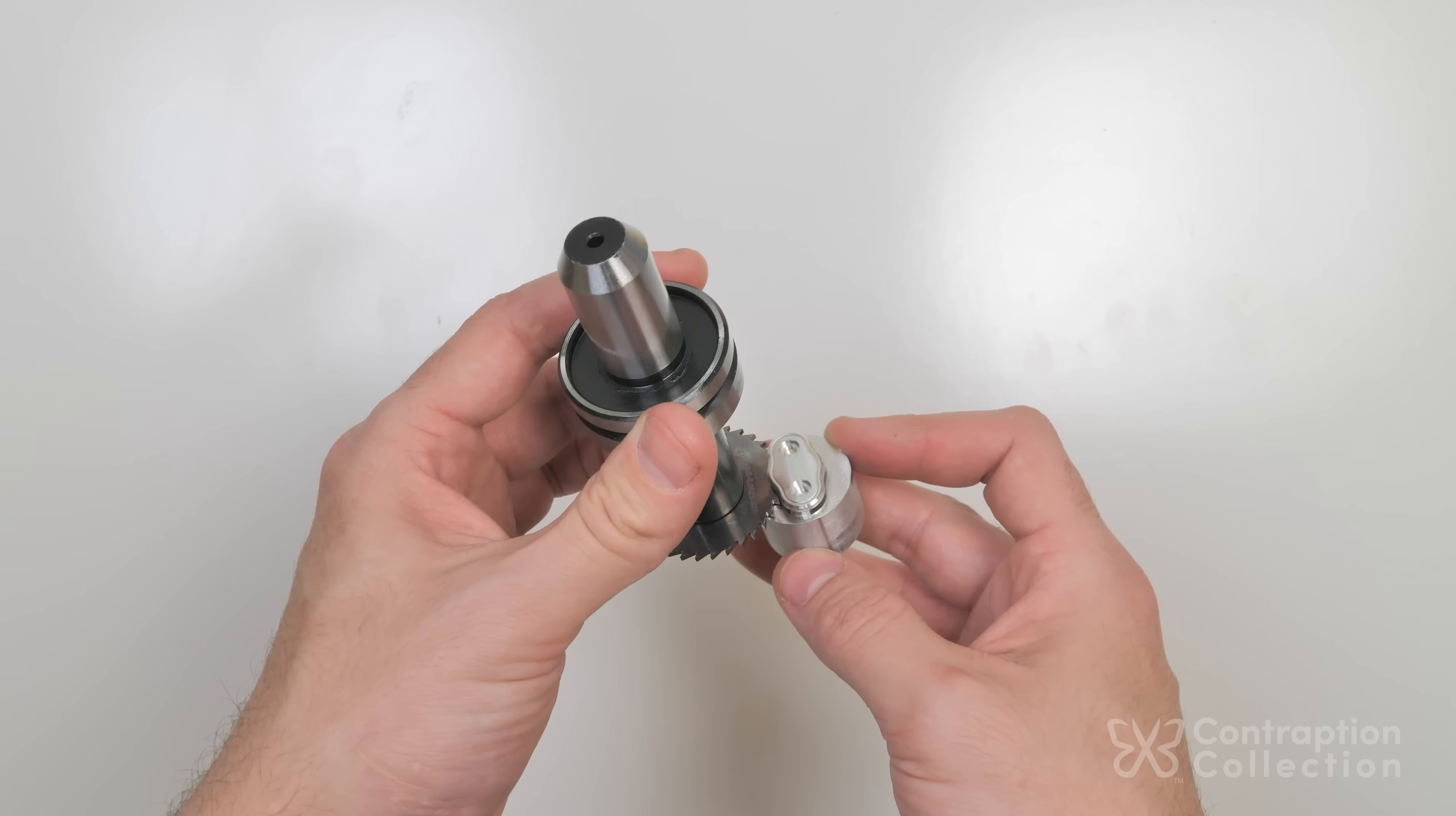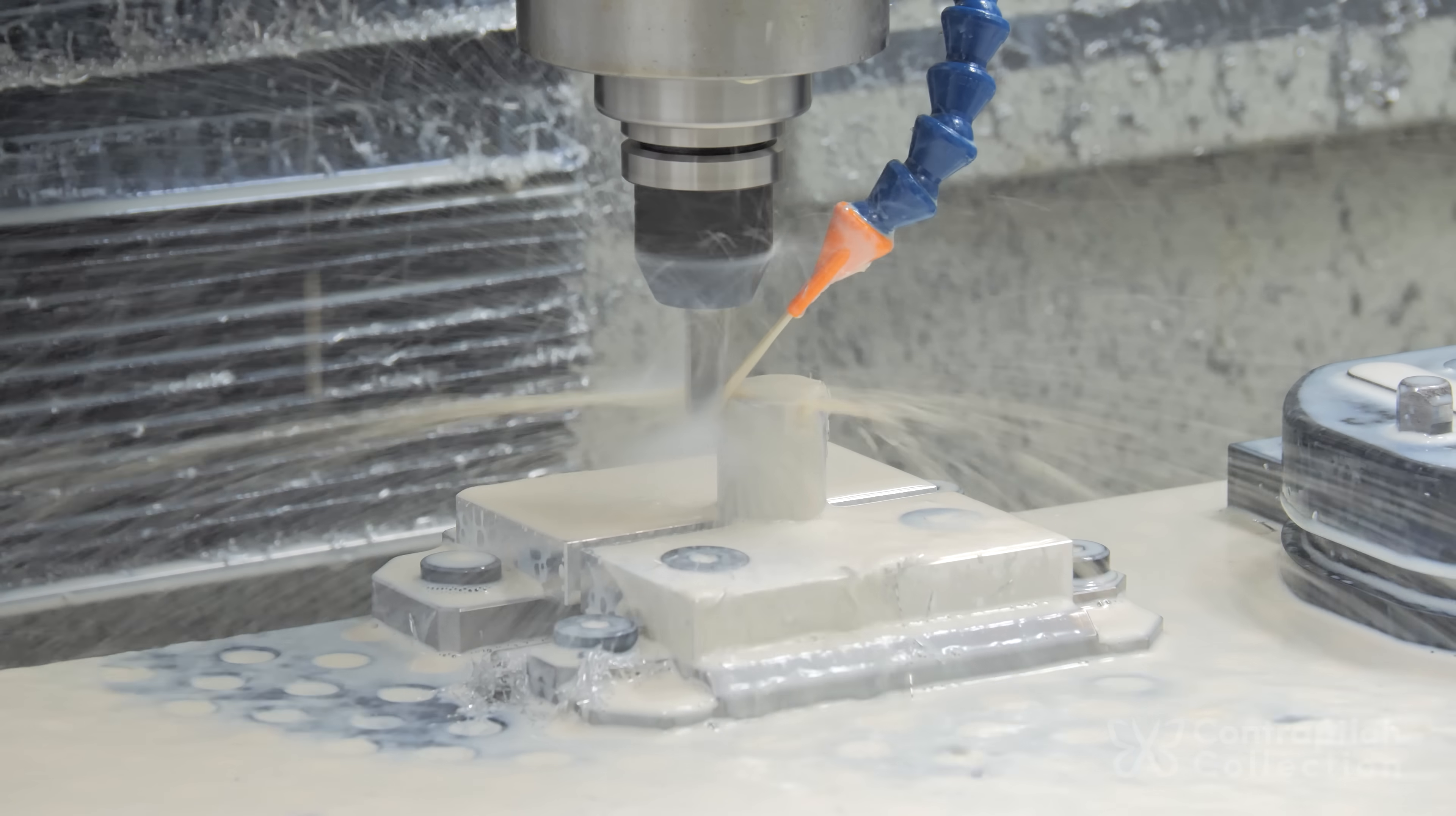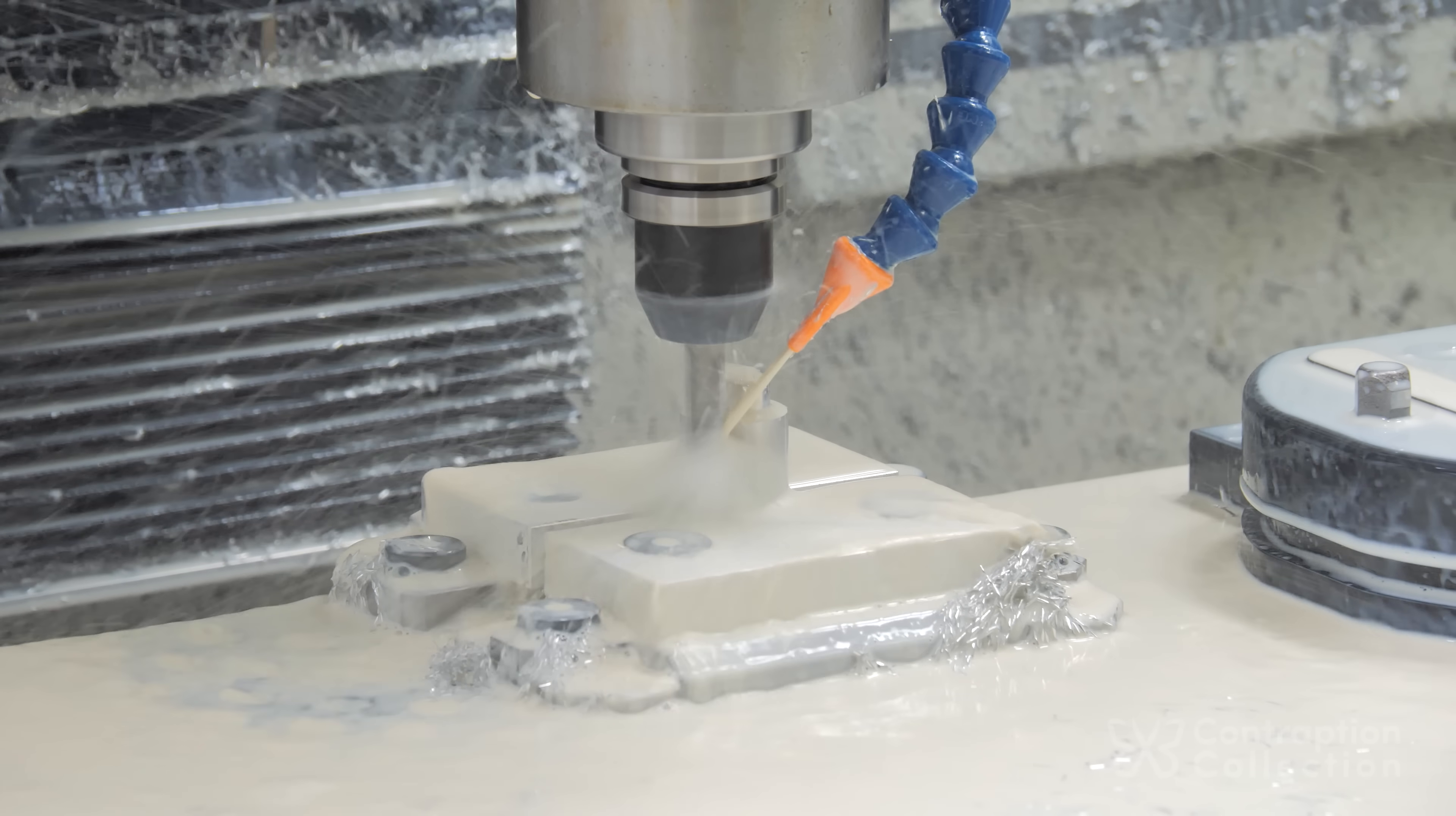Oh boy. I thought I gave myself enough room for the arbor, but I did not. I rehomed the machine and set everything up to try again. This time I'm using a 3/8 inch endmill because I need longer flutes.